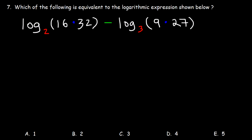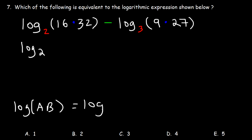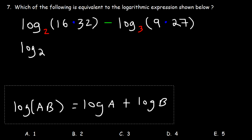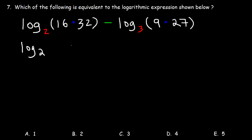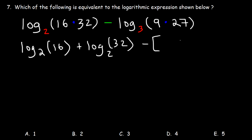Number seven: which of the following is equivalent to the logarithmic expression shown below? We need to split the log into two separate logs using the formula: log AB equals log A plus log B. So log of 16 times 32 is log 16 plus log 32, and log of 9 times 27 is log 9 plus log 27, and we'll distribute the negative sign.